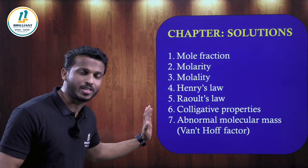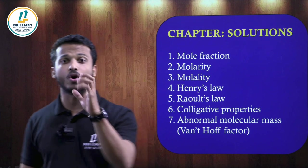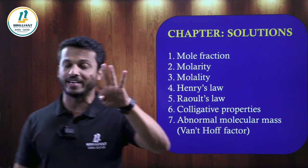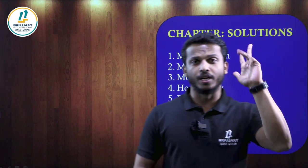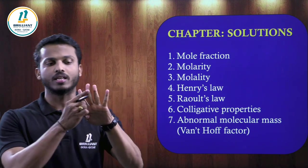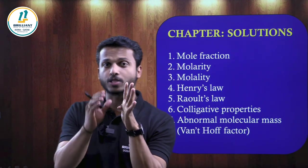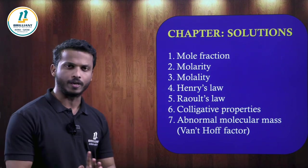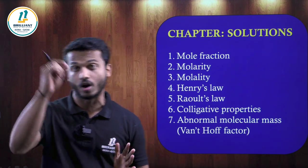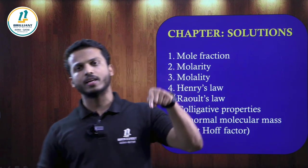You can expect a sure question from colligative properties — the property of a solution which depends on the number of particles. Study the definition and the four types: relative lowering of vapour pressure, depression in freezing point, elevation in boiling point, and osmotic pressure. Study all their equations, numericals, and terms — especially what is the cryoscopic constant and ebullioscopic constant. Also, the Van't Hoff factor 'i' for abnormal molecular mass questions can appear in MCQ or numericals.